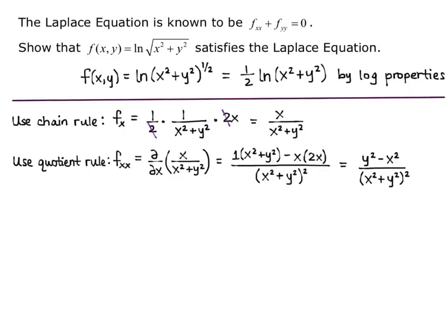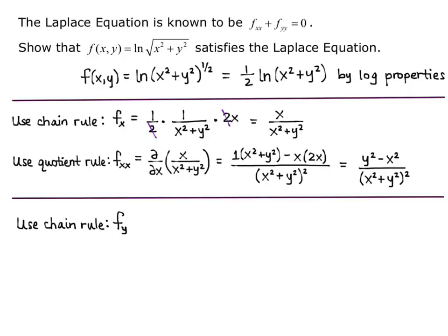Hopefully when we do the derivative with respect to y, we'll get the opposite signs in the numerator. For the first derivative with respect to y, I use the chain rule: the 1/2 constant multiple times 1 over x squared plus y squared, times 2y, because I'm taking the derivative of x squared plus y squared with respect to y. Canceling the 2 and 1/2 gives me y over x squared plus y squared.